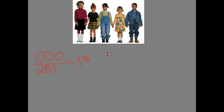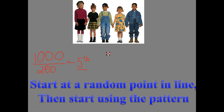What's important to know is that you can't start at the front just because you want to. You have to use a random number generator or randomly pull a number out of a hat to determine what position you're going to start at. Start at that random position and then ask every fifth — every nth — person in line. So I'm going to start at a random point in line, let's say this kid right here, and then ask every fifth person following him.